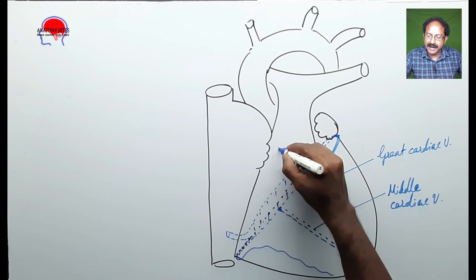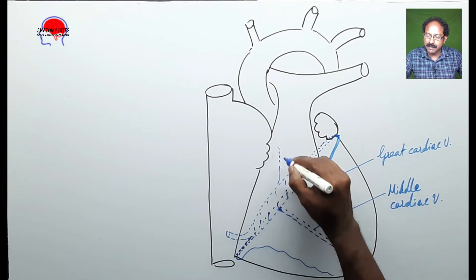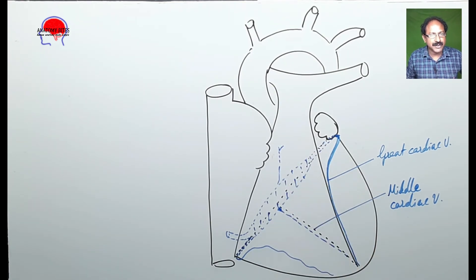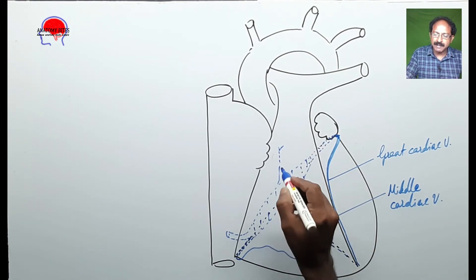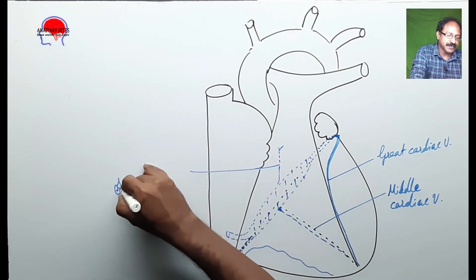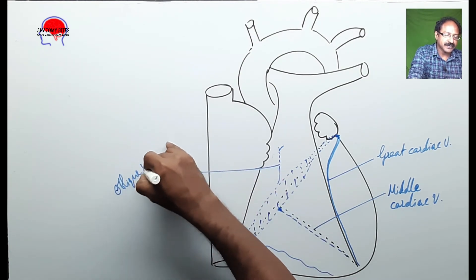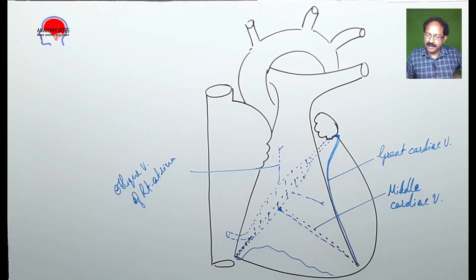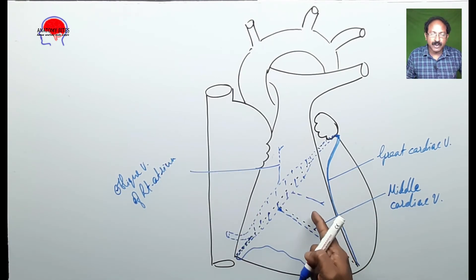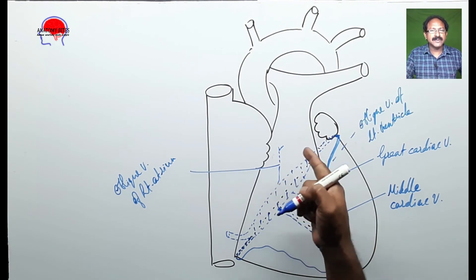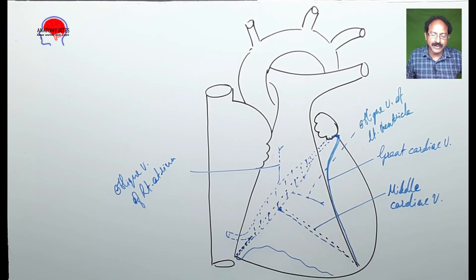It receives a vein from above, from the posterior aspect of the left atrium, named as the oblique vein of the left atrium. There is also a small vein from the posterior aspect of the left ventricle. So this is the major formation of venous drainage.